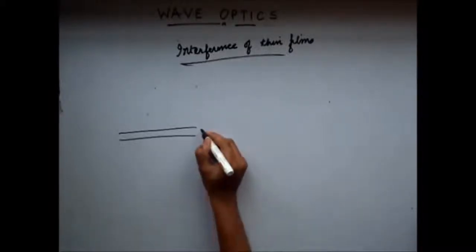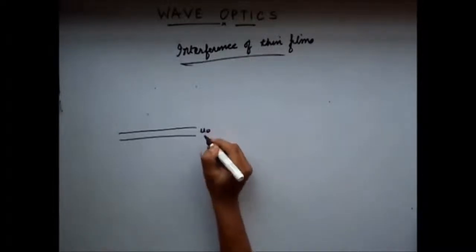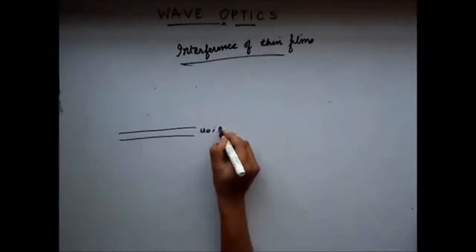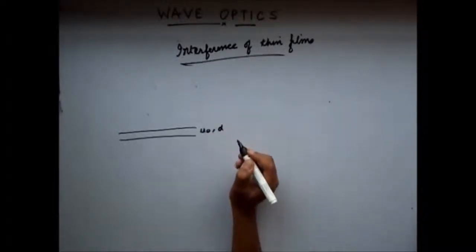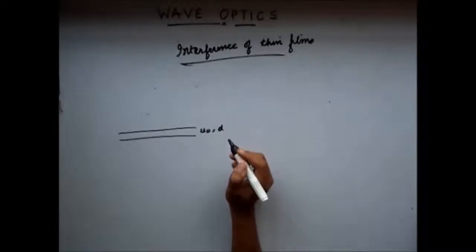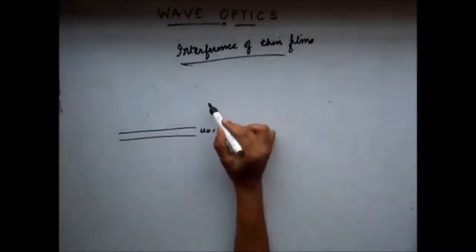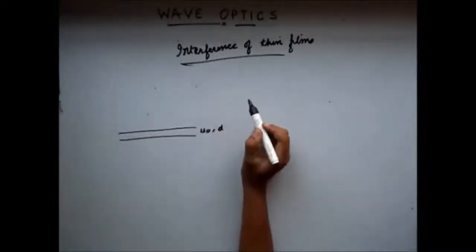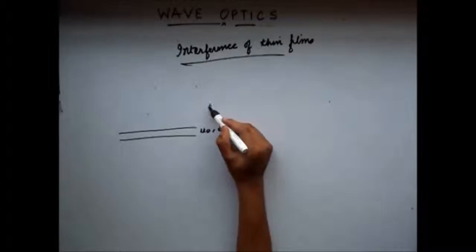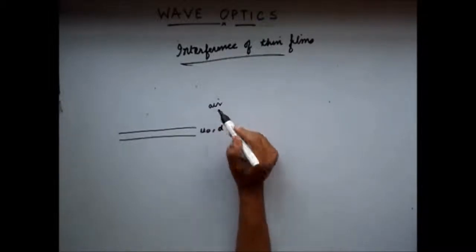Let's say that we have a thin film of refractive index mu, thickness d, and in a medium — let's say that this medium at present is air.